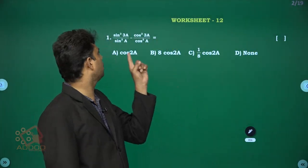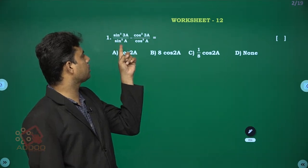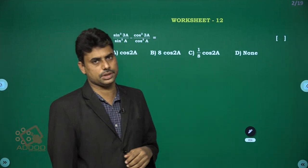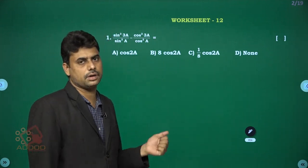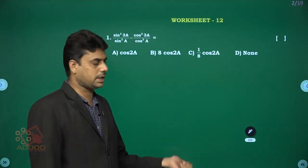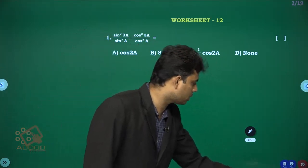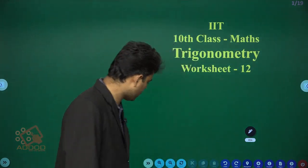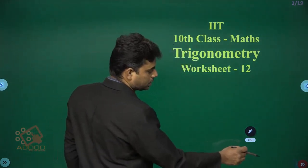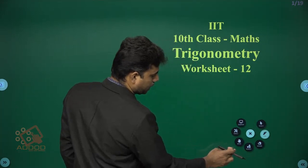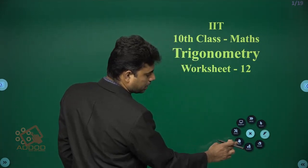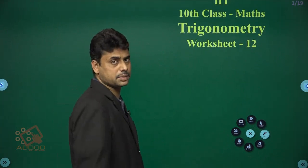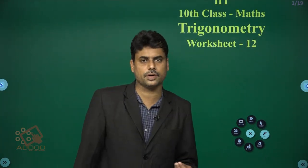The first question is: sin²3a divided by sin²a minus cos²3a divided by cos²a equals how much? Before going to this question, let's review the formulas for sin(a+b)·sin(a-b), cos(a+b)·cos(a-b), and tan(a+b)·tan(a-b).